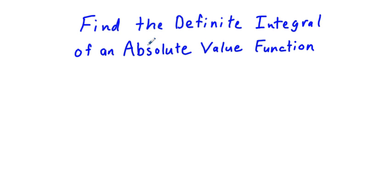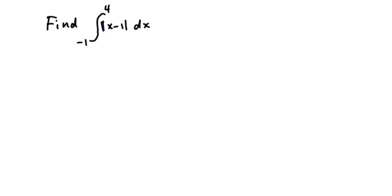Find the definite integral of an absolute value function. Here we have our first function: find the definite integral with the limits from negative 1 to 4 of the absolute value of x minus 1, dx.